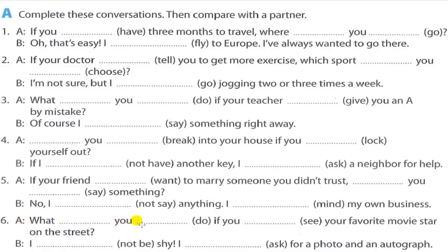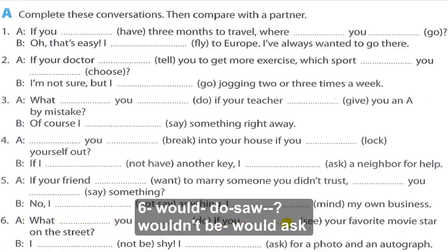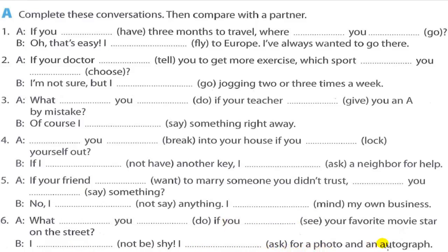6. 'What would you do if you saw your favorite movie star on the street?' — 'I wouldn't be shy. I would ask for a photo and an autograph — a signature.'